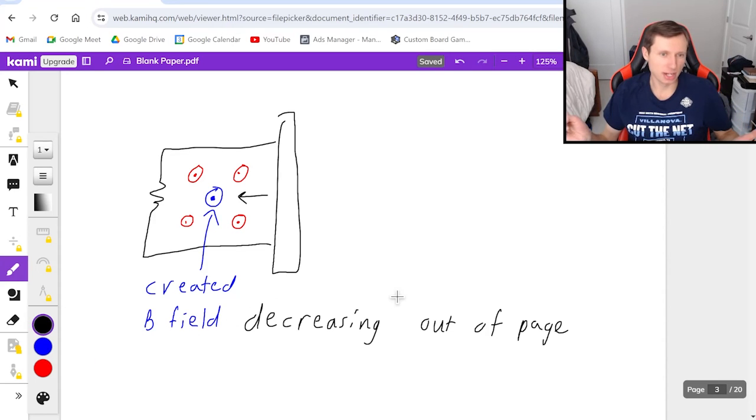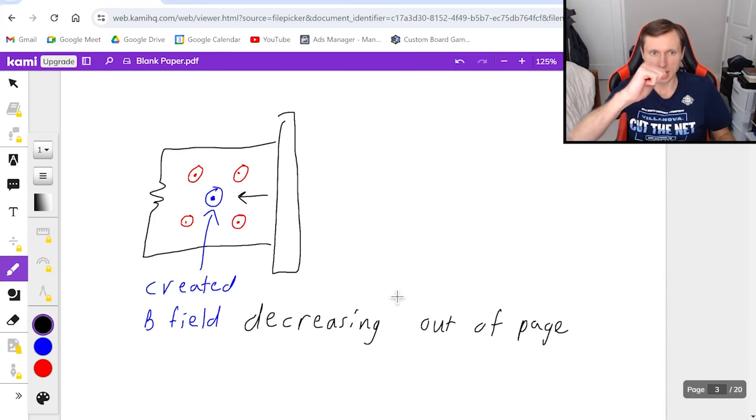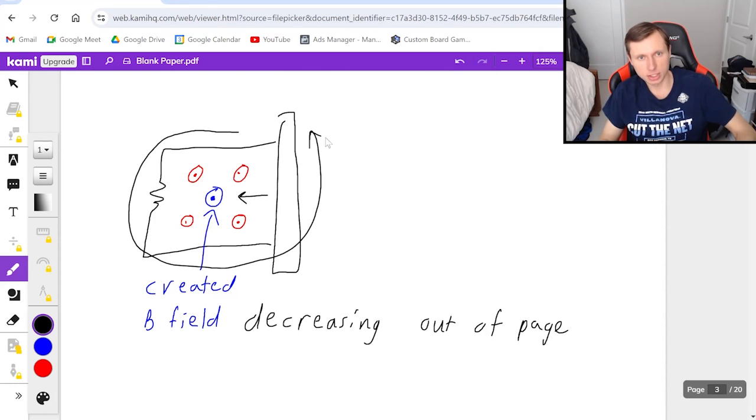And then to use the right hand rule here, I just point my thumb in the direction of the created B field, which is towards me out of the page. And then I curl my fingers. And that's the direction of the induced current. My fingers probably flip for the camera, but my fingers are curling counterclockwise. So the current is going to be counterclockwise for the direction.